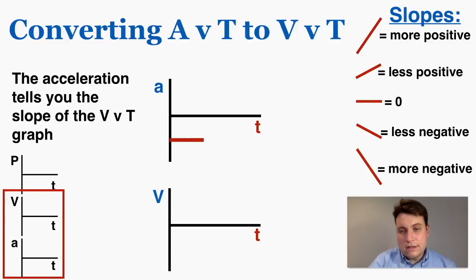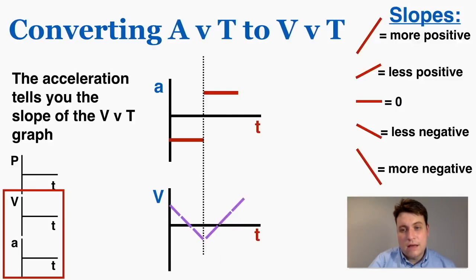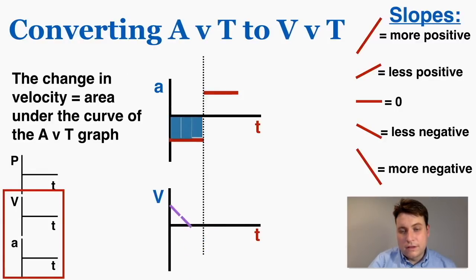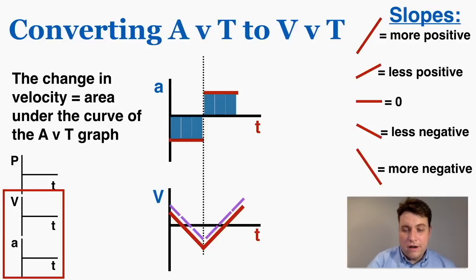If there's a change in the acceleration graph from negative to positive, that means the slope of the velocity graph starts off negative and at that point becomes positive. You can also use the area under the curve: the area under an acceleration graph equals the change in velocity, so a very negative area means a very negative change in velocity, and a positive area means the velocity is increasing. I prefer the tangent line method, but you should remember this area method as well.